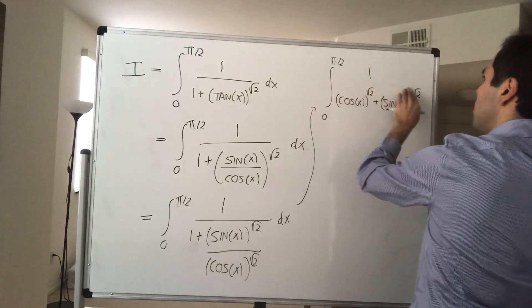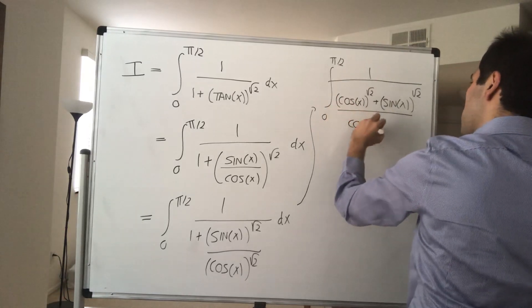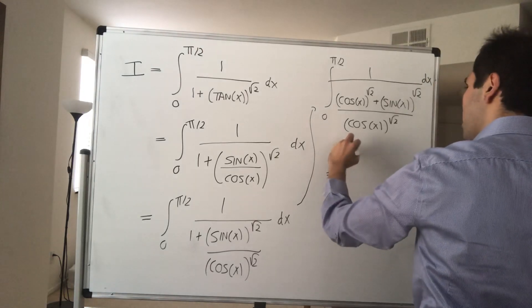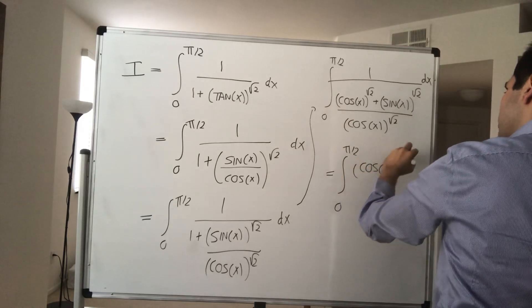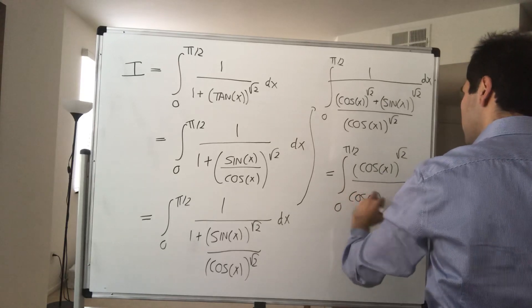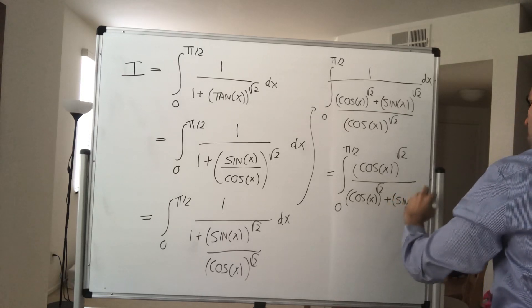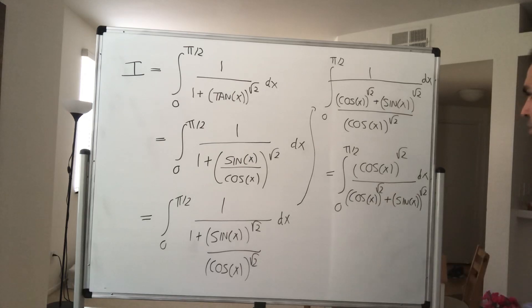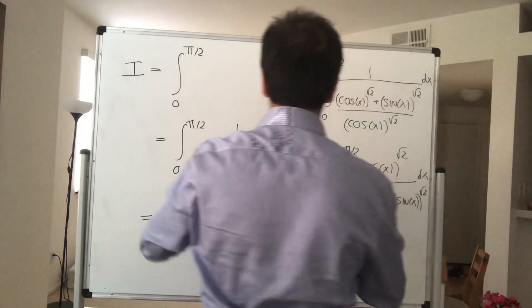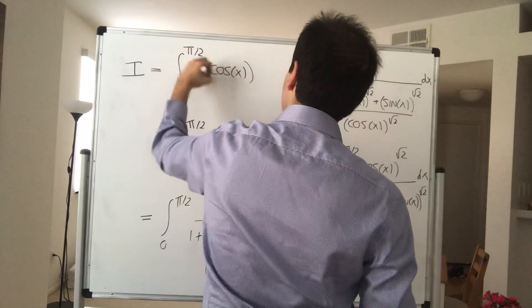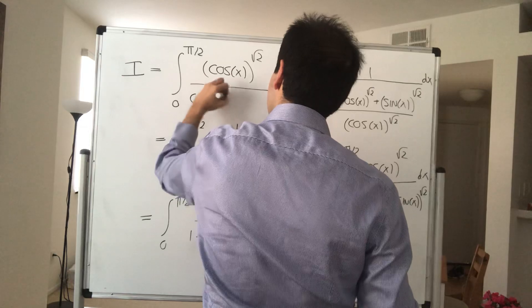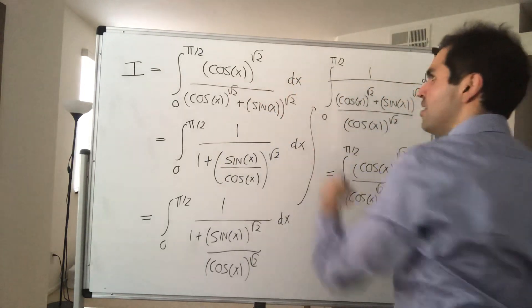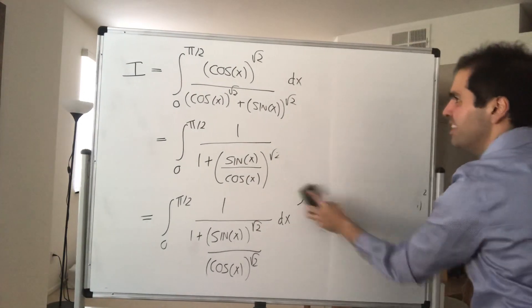You can just put on a common denominator, so that's the integral from 0 to π/2 of cosine of x to the square root of 2, over cosine of x to the square root of 2 plus sine of x to the square root of 2, dx. In other words, there's no more tangent — there's just cosine and sine — so that's good.